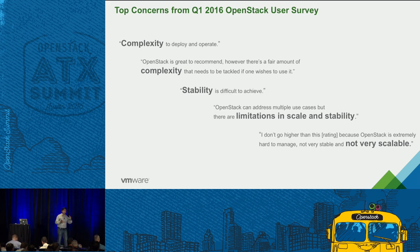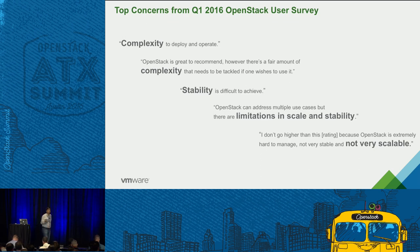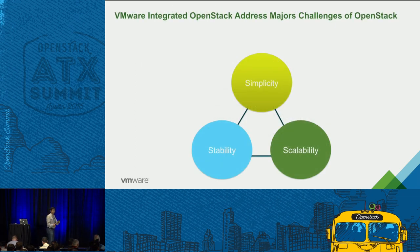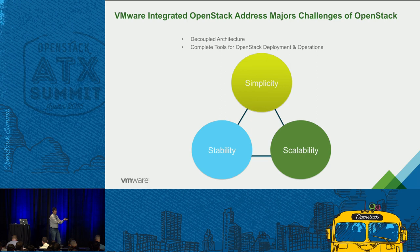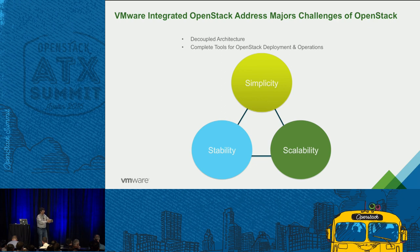From a consumer perspective, you give them OpenStack APIs and let them loose — they'll start breaking the cloud. Operators are the ones that need most of the tooling. These challenges — simplicity, stability, scalability — came out of the 2016 survey. For simplicity, VIO uses a decoupled architecture and provides tools including patching, upgrade, backup, recovery, monitoring, and troubleshooting. For stability, vSphere has been proven to run hundreds of thousands of workloads. Whether you're running cattle or pets, it gives you a really robust environment.